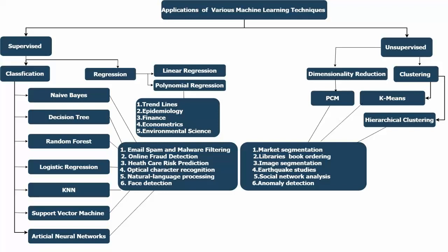These are various machine learning techniques and applications. Mainly, learning will be classified into two types: one is supervised and another one is unsupervised. Supervised uses labeled data and unsupervised uses unlabeled data.